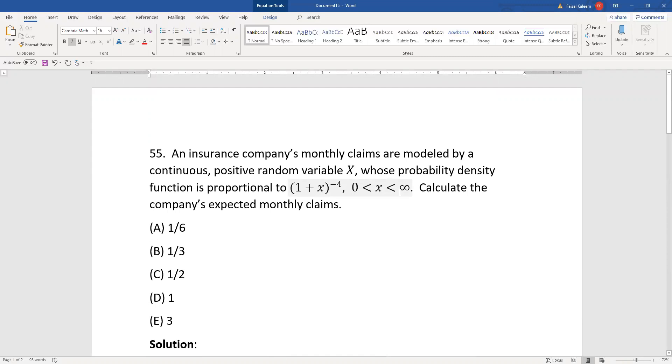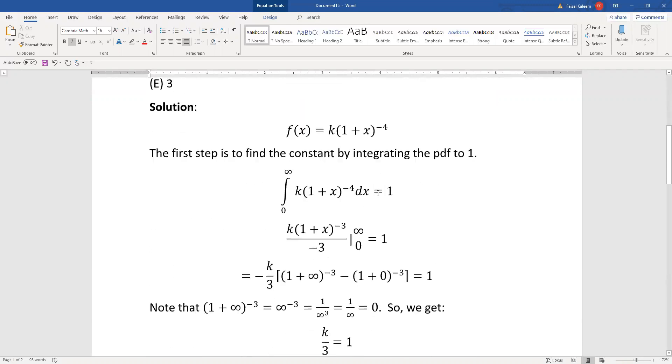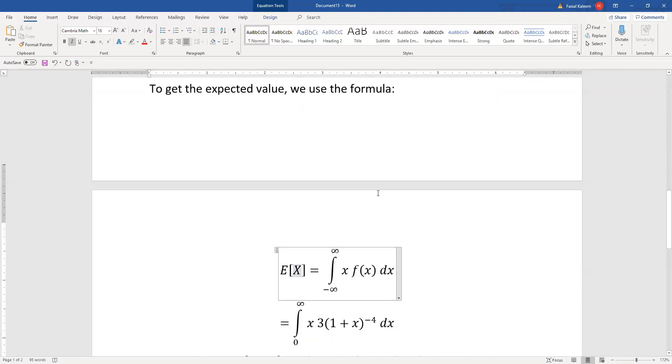Sometimes they tell us it's zero otherwise, but if they don't, then if they say this is a PDF, it's understood that it's zero outside the portion they indicate. So it's only from zero to infinity, K times (1 + x)^(-4).